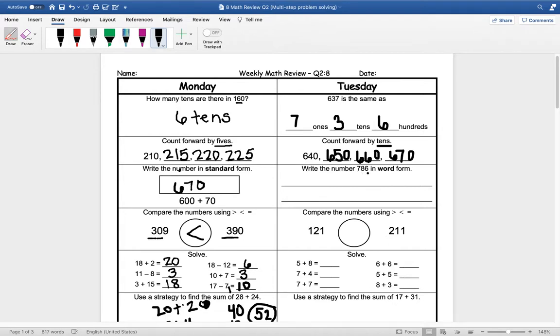Write the number 786 in word form. All right, remember you have a list from the beginning of the year of how to spell these words. So it would be 7 hundred 80, 6.